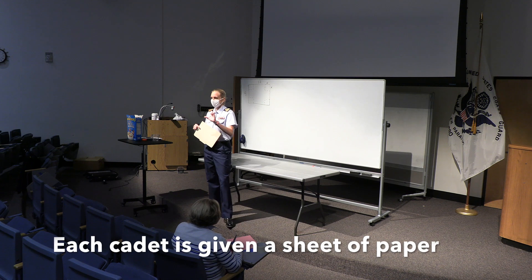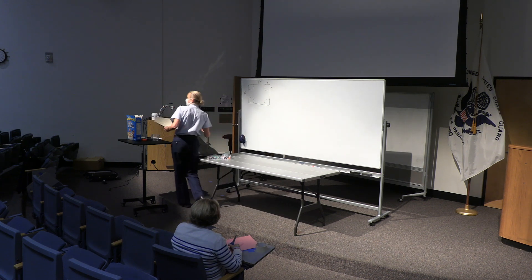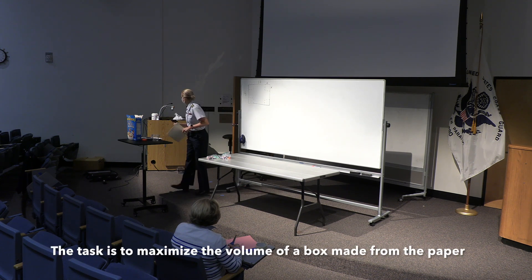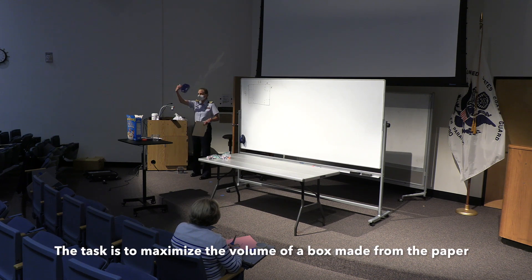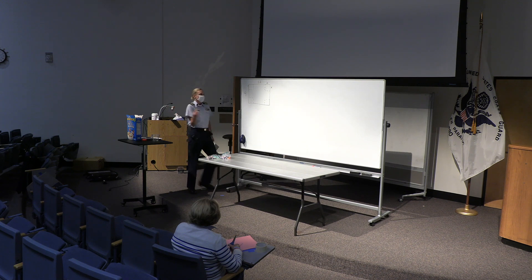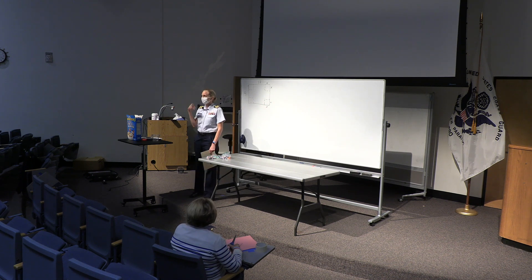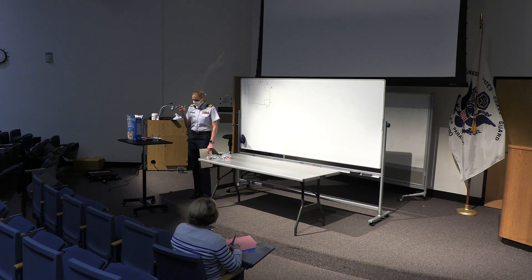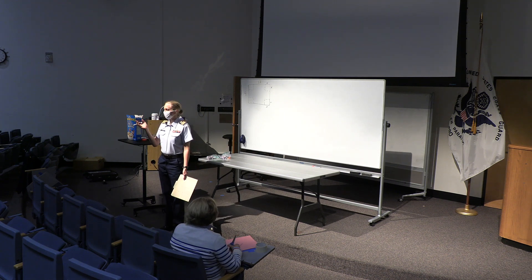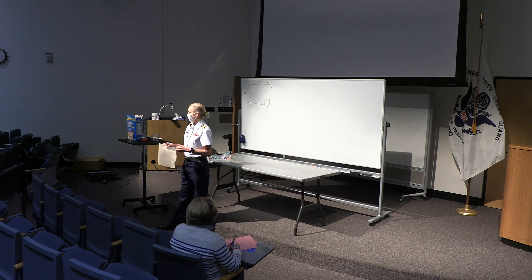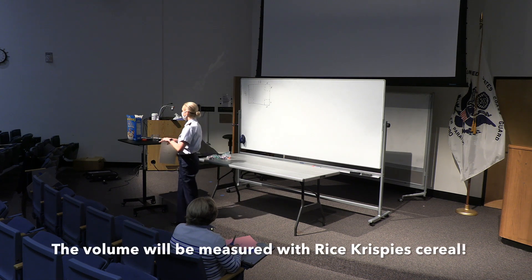I gave you some squares you can use to save time. You need to build an open-top box. Here are some examples I made. When you cut, the cuts have to be a square — the same size on each end. That's another constraint we have. I gave you different size squares; if you didn't choose one, just make sure you cut a square. We'll give you about three or four minutes to tape it together, and then I'll choose a few to figure out which one has the most volume — measured with Rice Krispies.